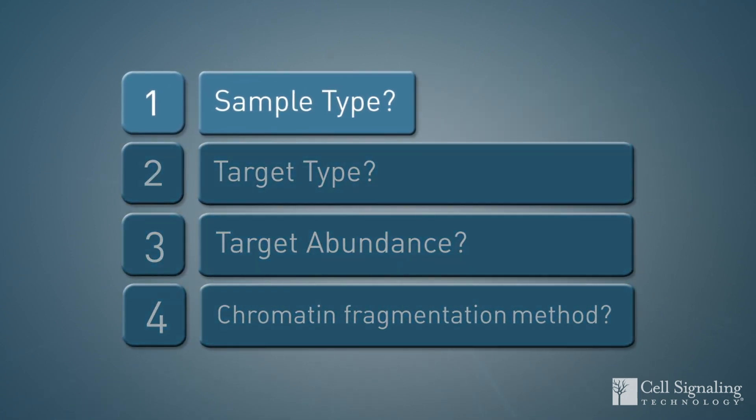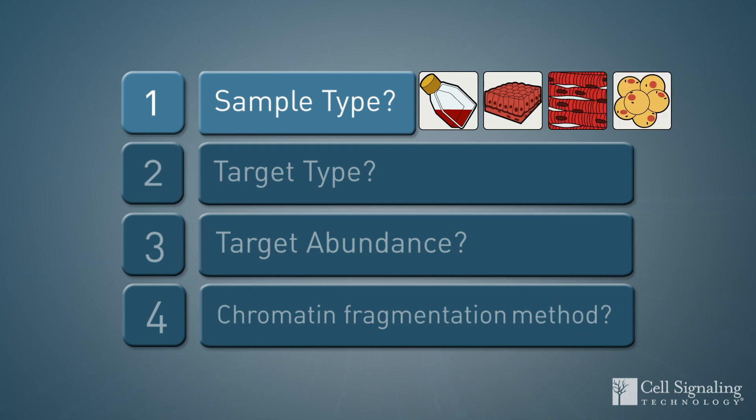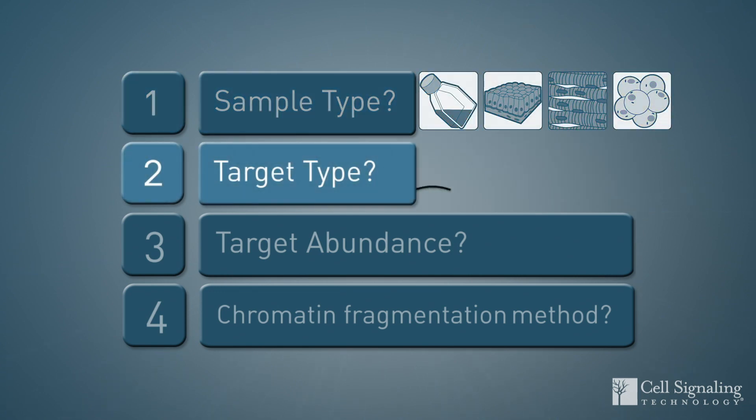First, what is your input sample type: cells or tissues? Second, what type of protein is being targeted for immunoprecipitation?